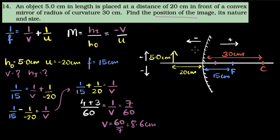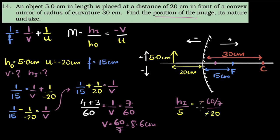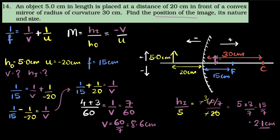Now I need to find the height of the image and its nature. Height of image divided by height of object (5 centimeters) equals negative v over u, which is minus 8.6 over minus 20. Simplifying gives 15 over 7, which is approximately 2.1 centimeters. The height is positive, meaning it's above the principal axis but smaller than the object. Because it is above the principal axis, the image is virtual. This is how we use the mirror formula and magnification formula, along with sign conventions, to solve mirror problems.